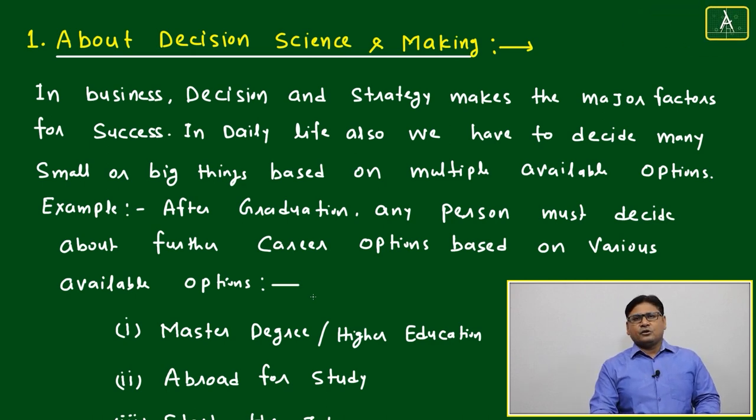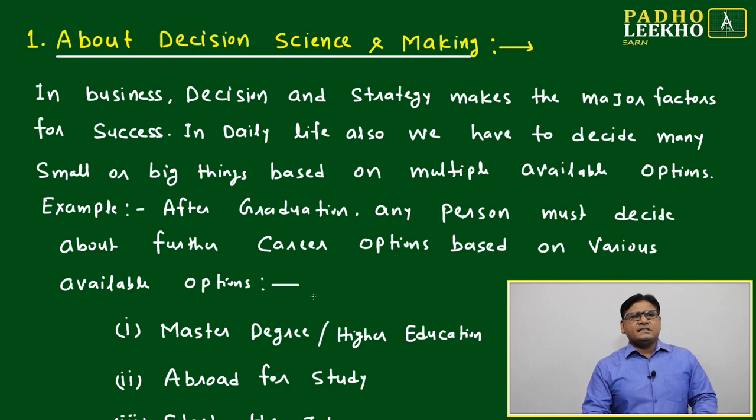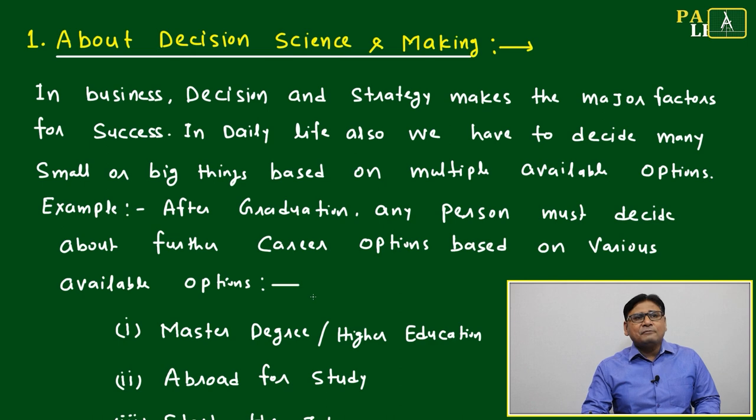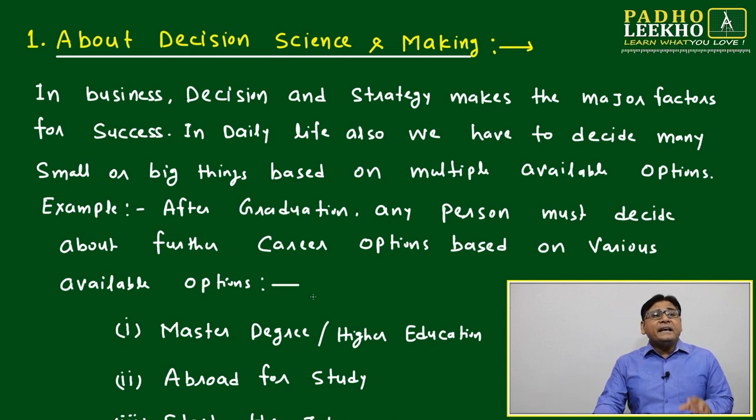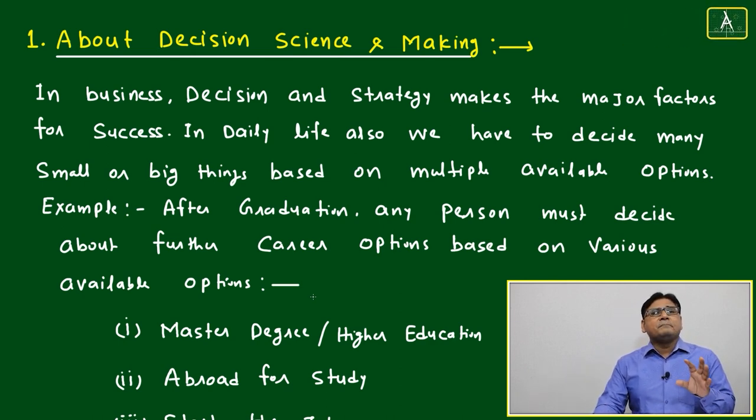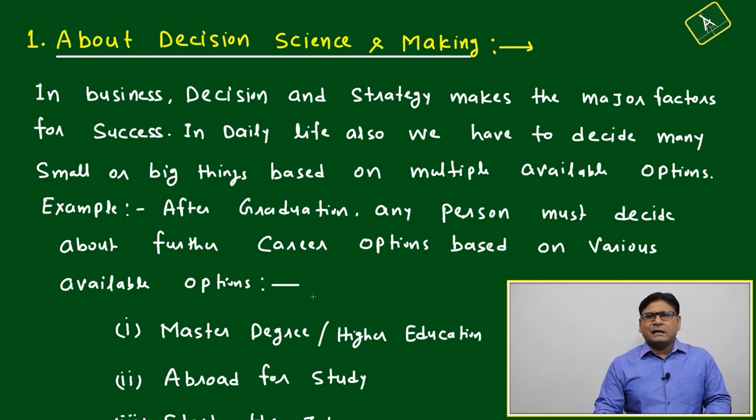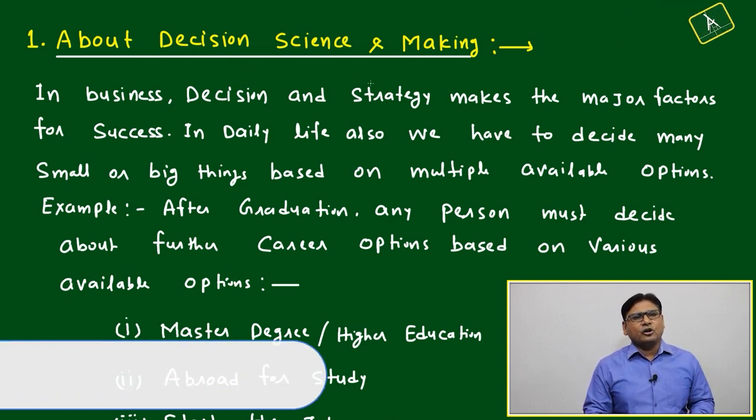We'll try to get the idea here about decision science and making. We know all these things. I'm just repeating - it's not a big thing. In business, decision and strategy make the major factors for success. In daily life also, we have to decide many small or big things based on multiple available options.